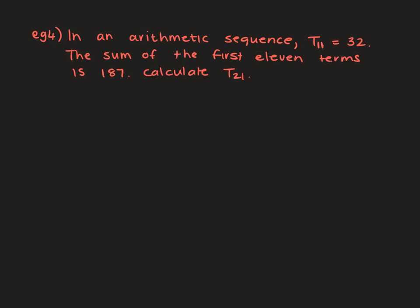Last example to wrap this all up. In an arithmetic sequence, the 11th term is 32. Since it's a sequence and arithmetic, A plus 10D equals 32. Remember, the coefficient of D is one less than the position of the term.